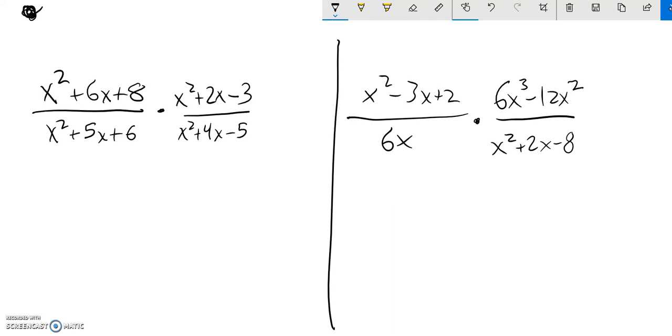Looking at this one, things that multiply to 8 but add to 6. 1 and 8, 2 and 4. That's it, 2 and 4 multiply to 8 and add to 6. So this factors to x plus 2 times x plus 4.